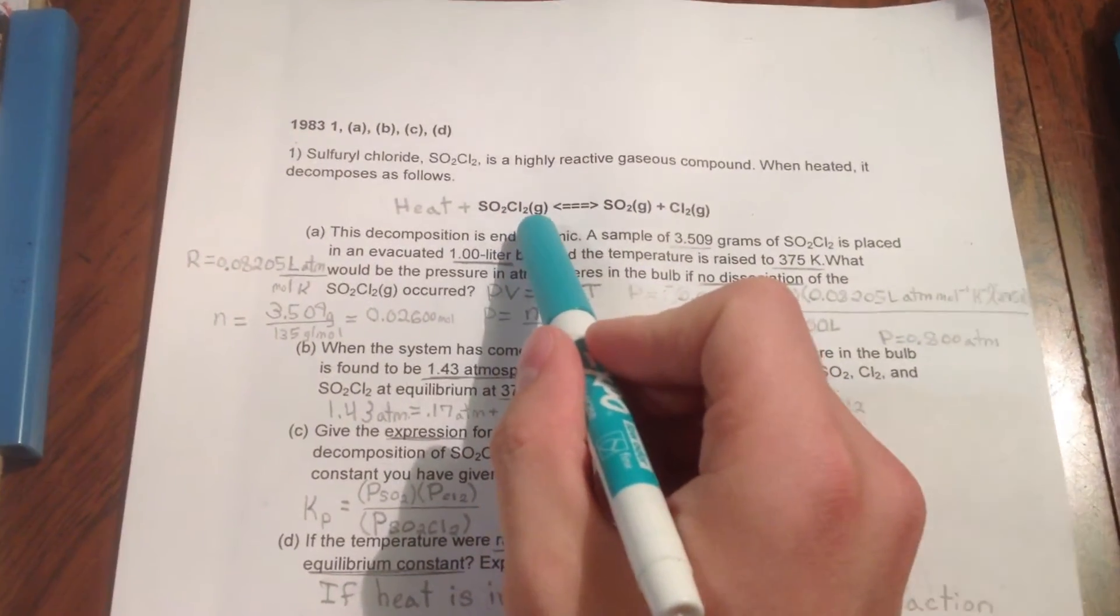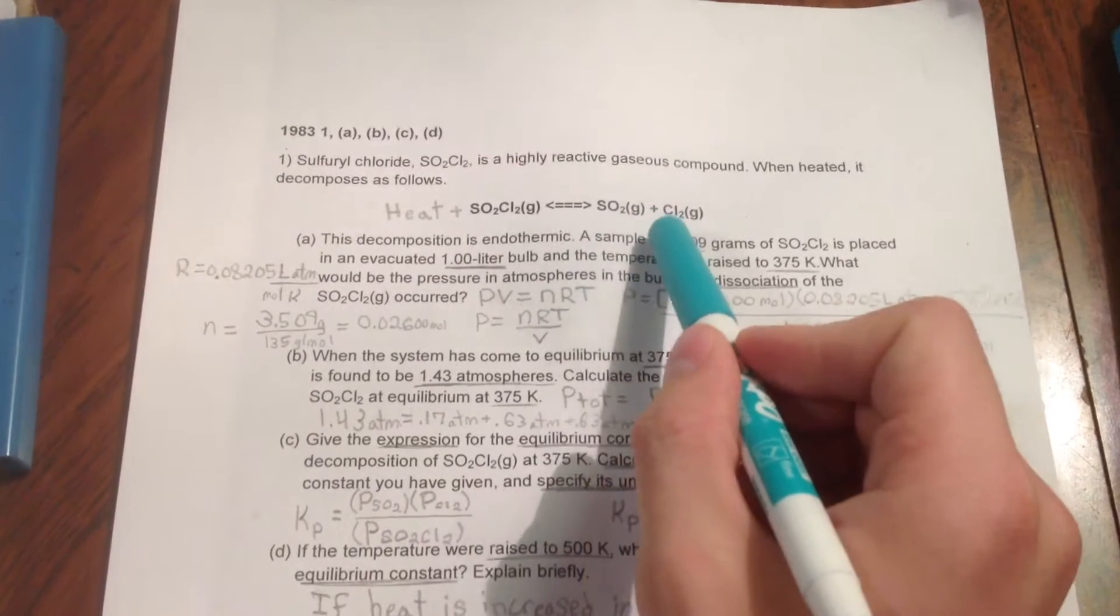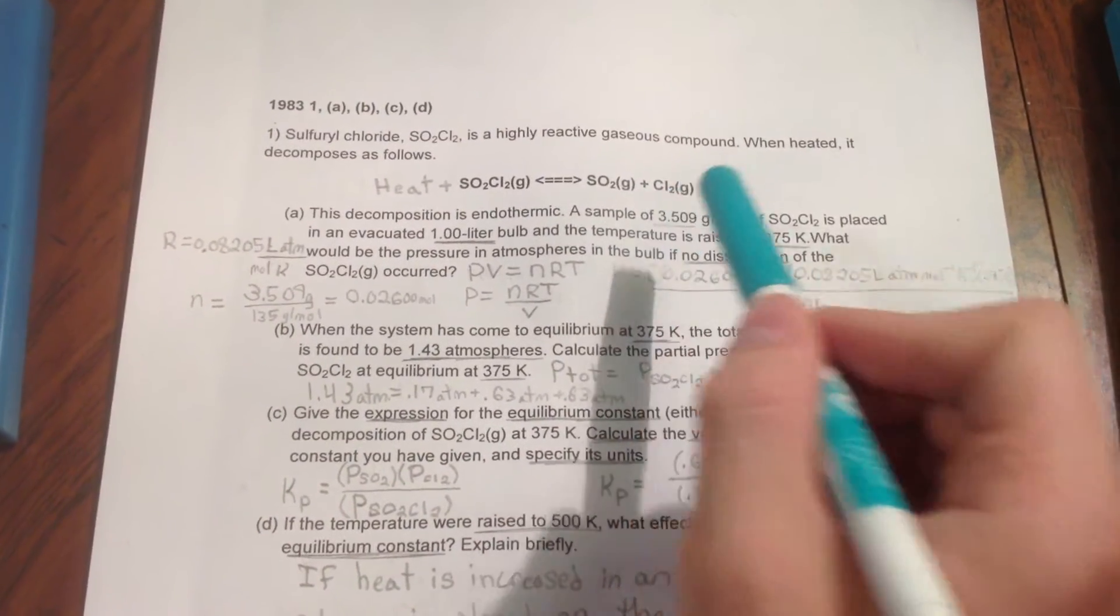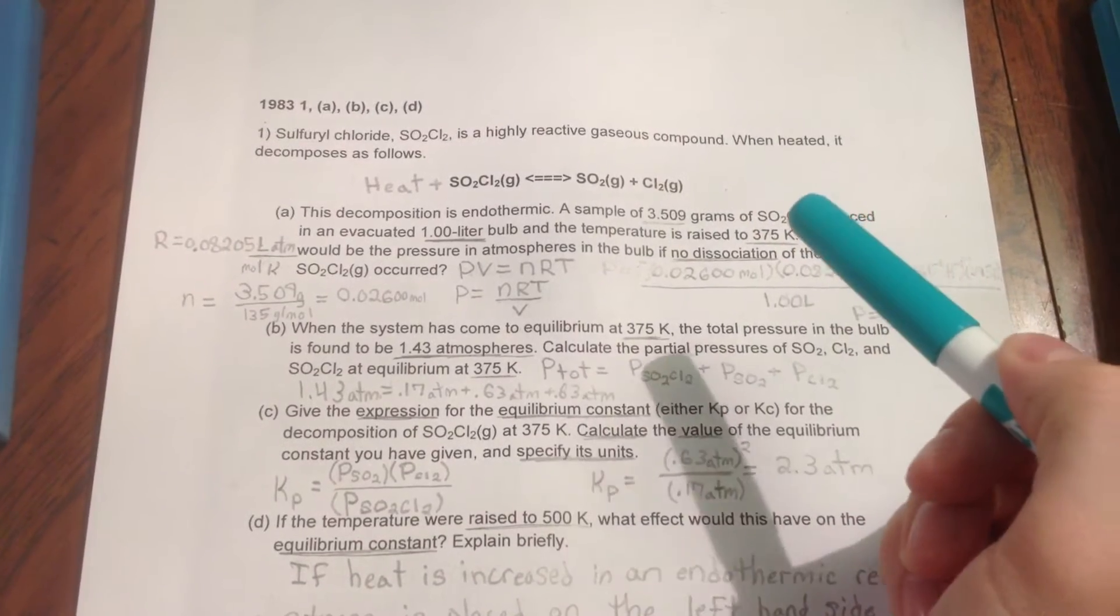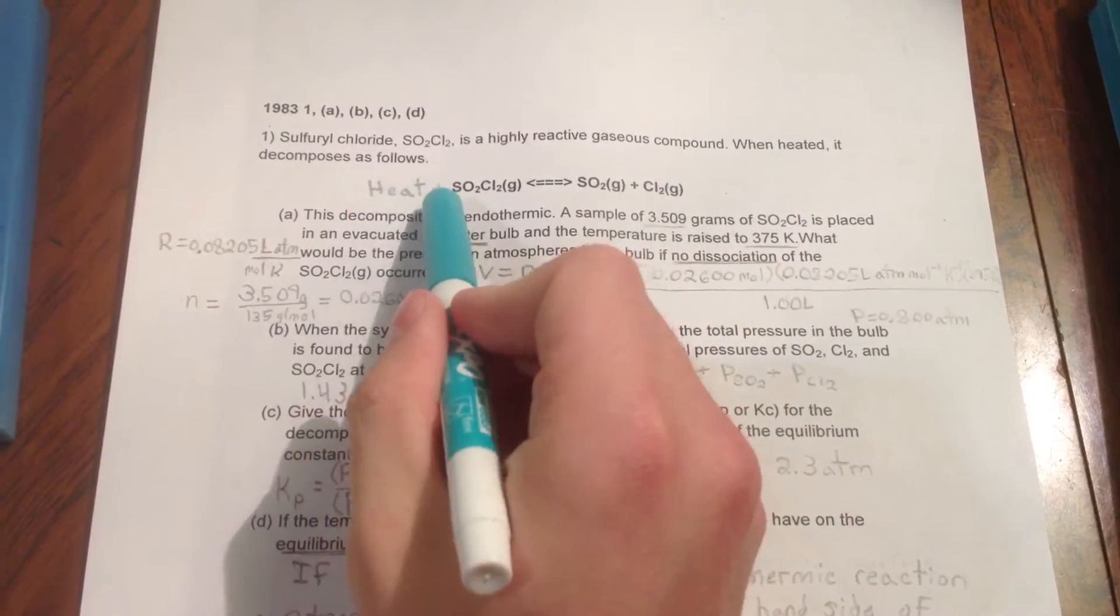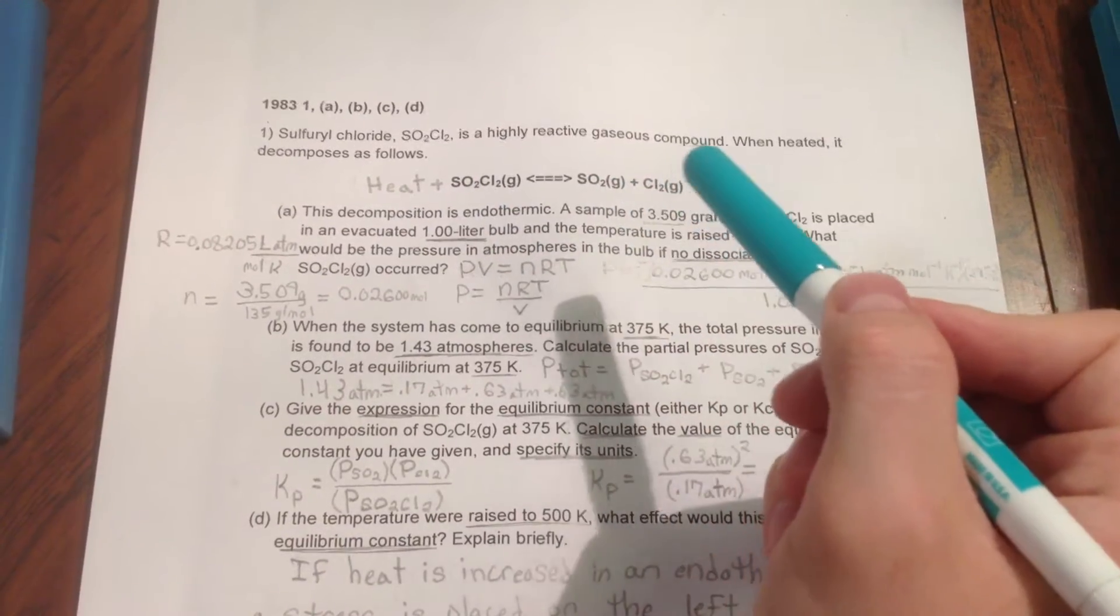SO2Cl2 gas yields SO2 gas plus Cl2 gas. Although, to better envision the endothermic reaction, it is helpful to add heat plus to the beginning of the equation.